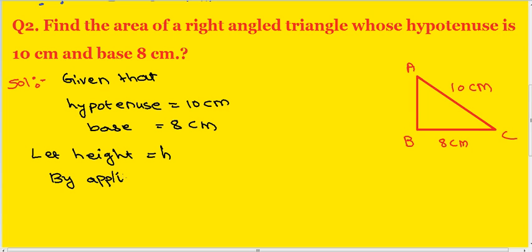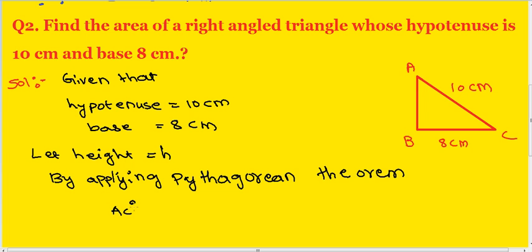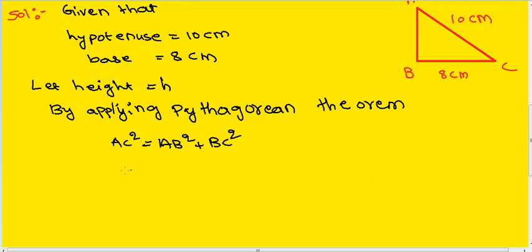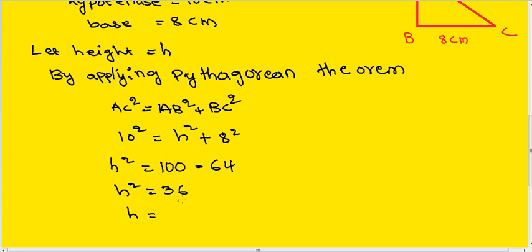By applying Pythagorean theorem, AC square equals AB square plus BC square. Therefore h square equals 10 square minus 8 square equals 64. Therefore h square equals 36. That h equals square root of 36 that is 6. Okay.